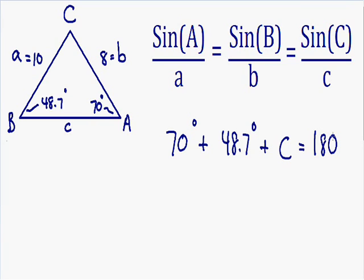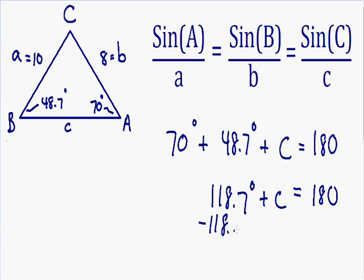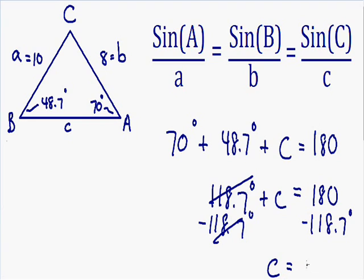We can solve for angle C quite easily. Adding 70 and 48.7 gives 118.7 degrees, so 118.7 plus C equals 180. Subtracting 118.7 from both sides, the 118.7s cancel out and we get C equals 180 minus 118.7, which is 61.3 degrees. So angle C is 61.3 degrees.